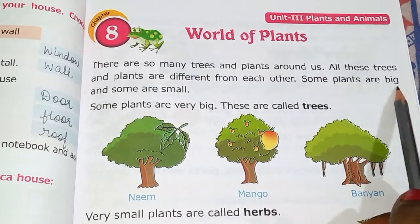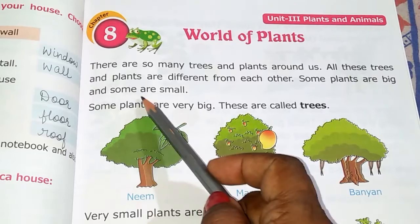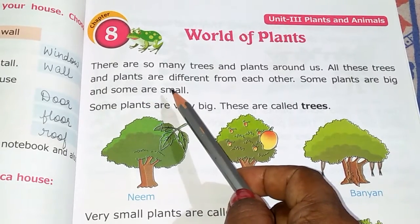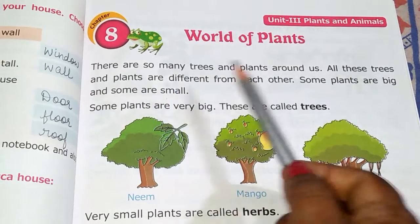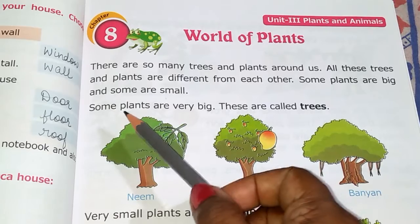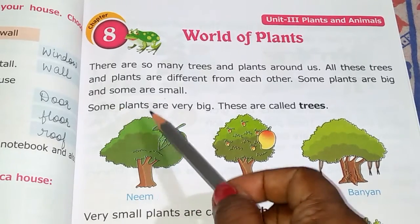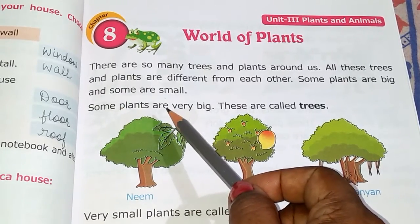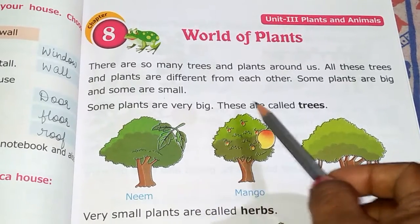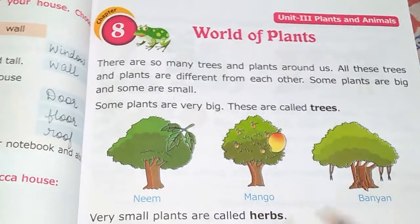Some plants are big and some are small. Some plants are very big and they are known as trees.